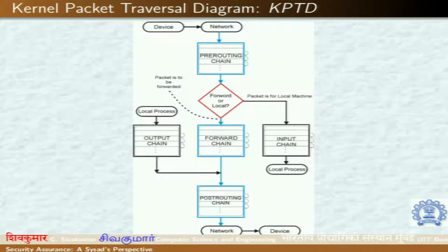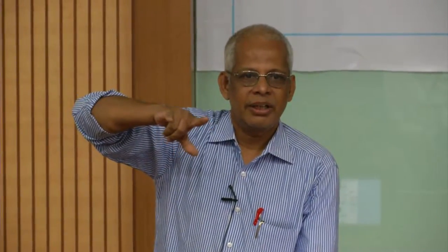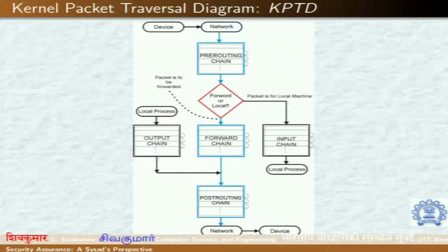If a packet tries to reach any other destination, it's dropped. If you want to give faculty only minimum access — for example, they say they want Google, so you give them only Google — that is a policy. There are three chains: output chain for packets originating from the machine, input chain for packets coming to the machine, and forward chain for routing packets between interfaces. Routers use the forward chain. There is also pre-routing and post-routing for NAT decisions.